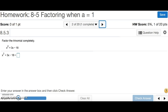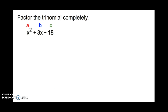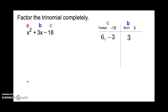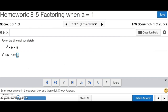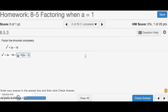Number 2, we do the same thing. We write a, b, and c for our coefficients. Factor is negative 18 and sum is positive 3. Two numbers that multiply to negative 18 but add up to 3 are 6 and negative 3, because negative 6 plus... wait — 6 and negative 3 won't work. The correct pair is negative 6 and positive 3, giving positive 3. Be careful of the signs. The answer is x plus 6 times x minus 3. And that's number 2.